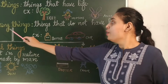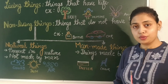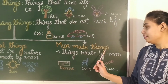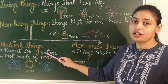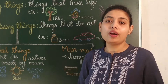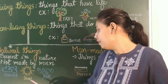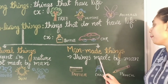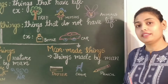Children, non-living things can further be classified into two groups: natural things and man-made things. Things which are present in nature and are not made by man are called natural things. For example, clouds, sun and air. Whereas things which are made by man are called man-made things.